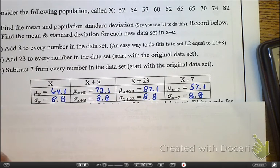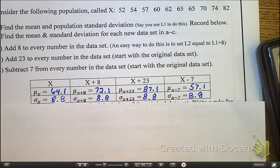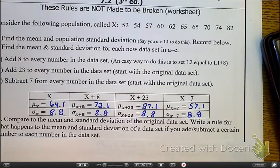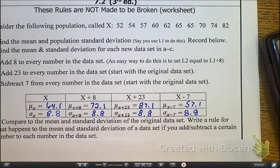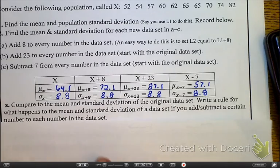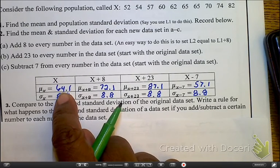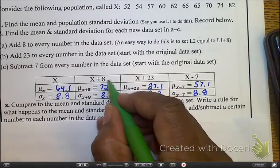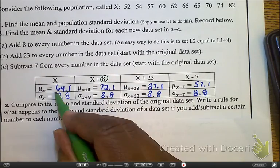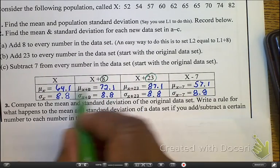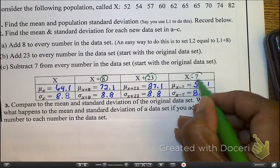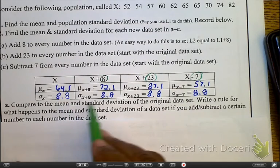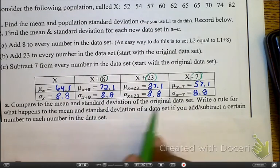Now, the next question asks us to come up with a general rule. If you notice, what happened here was the mean is the original mean. Here is 8 more than that mean. Here is 23 more than that mean. Here is 7 less than that mean. But the standard deviation is the same.